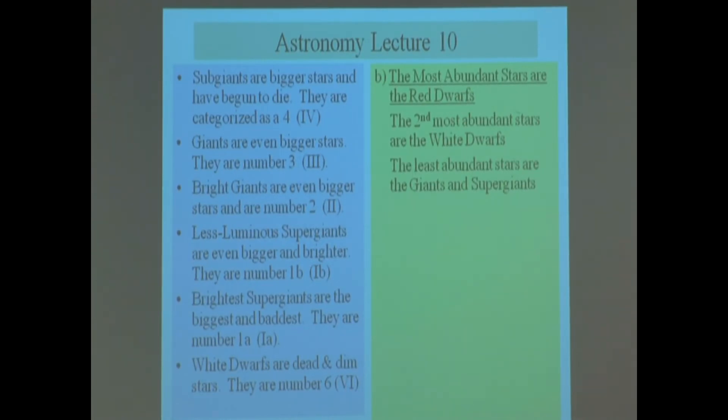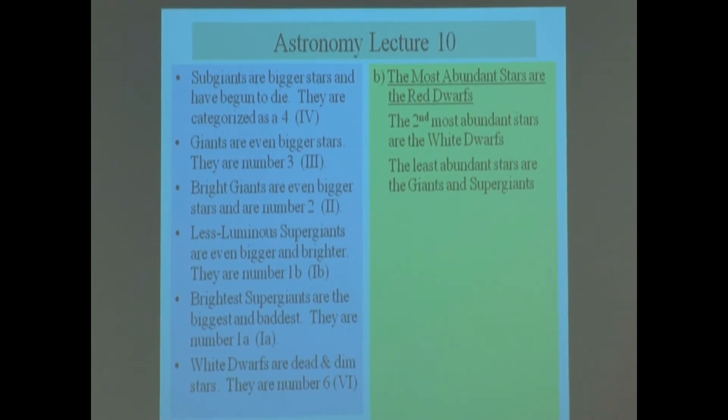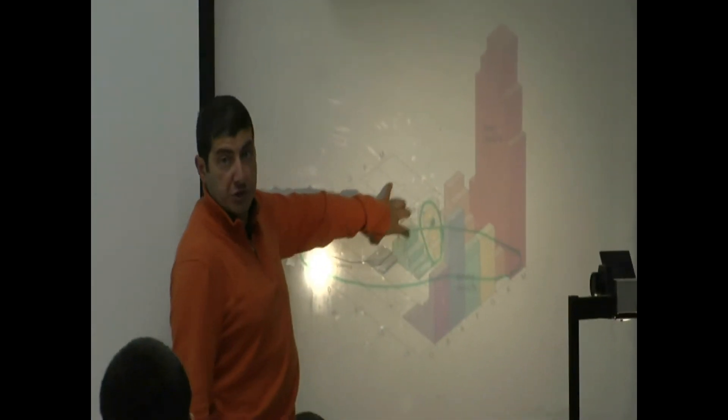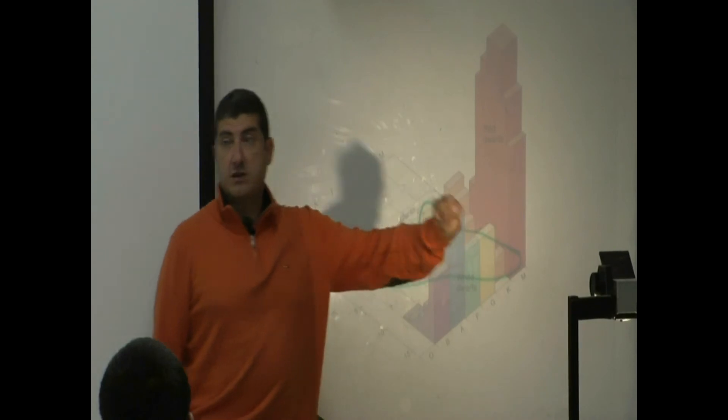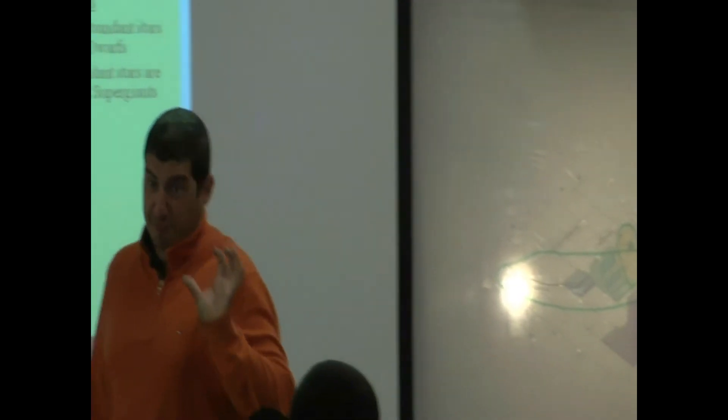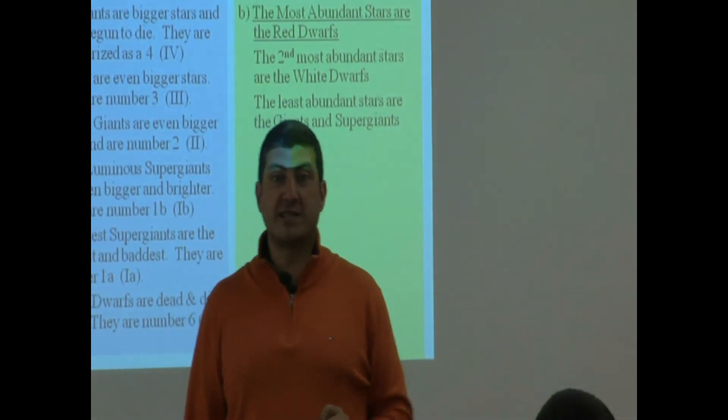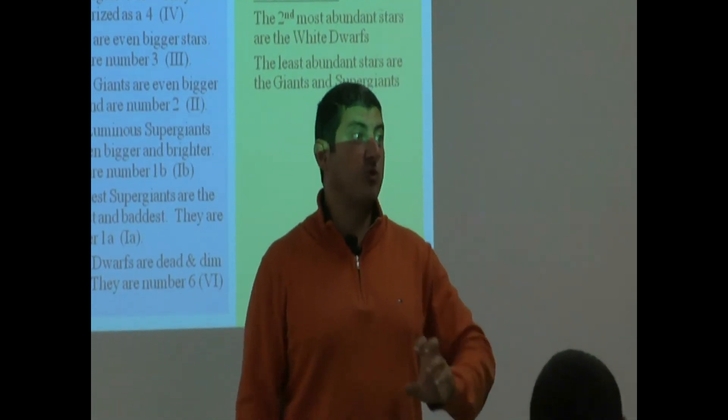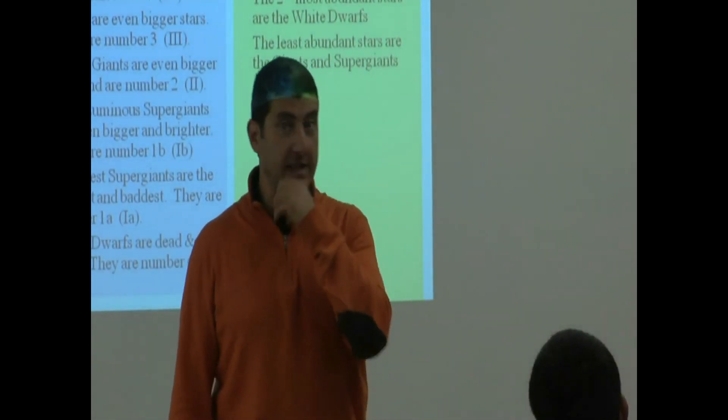I've always wondered what the sky would have looked like if things were opposite - if these guys lived very long and these guys lived very short, and the sky would be full of super giants and giants. What would the sky look like? It would be amazing.